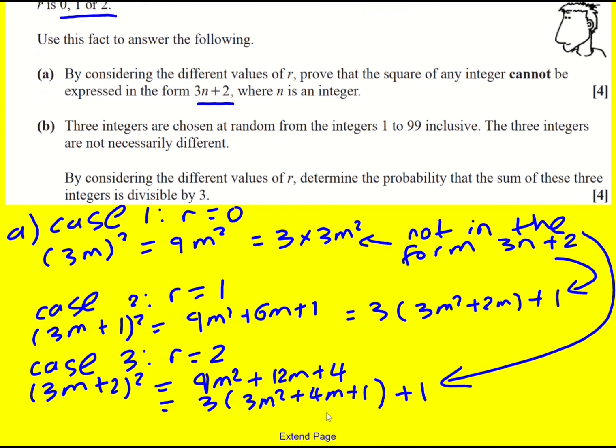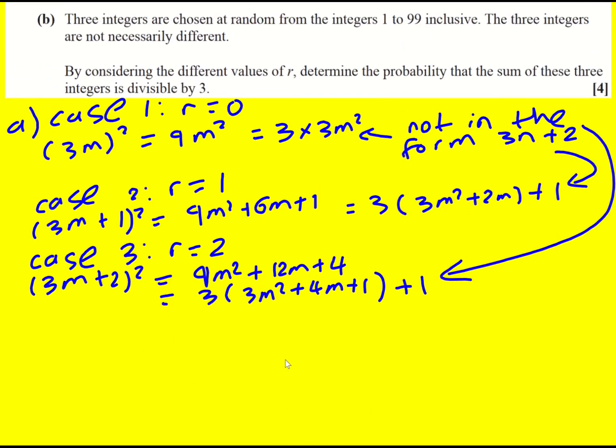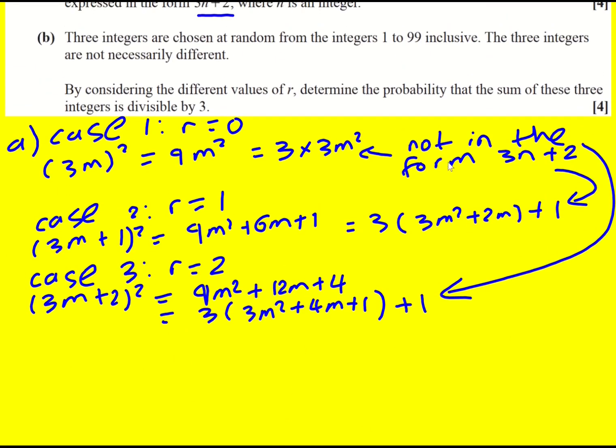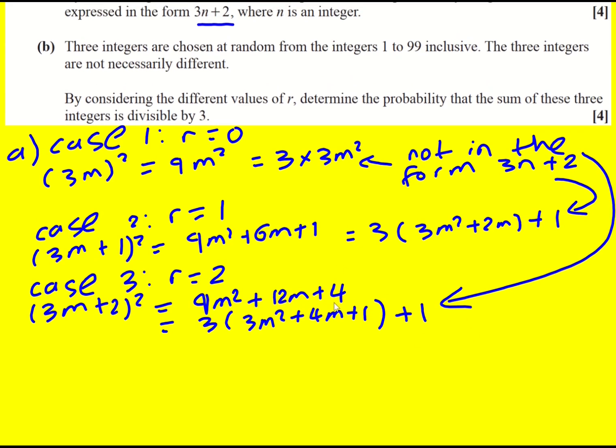And that's it. That's all we need to do. We've shown that every integer, when you square it, is either a multiple of 3 or 1 more than a multiple of 3. Therefore, never 2 more than a multiple of 3. That's right, little conclusion.